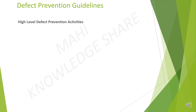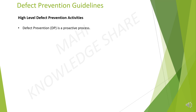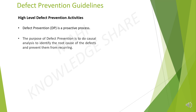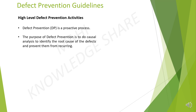High Level Defect Prevention Activities. Defect prevention is a proactive process. The purpose of defect prevention is to do causal analysis to identify the root cause of the defects and prevent them from recurring.